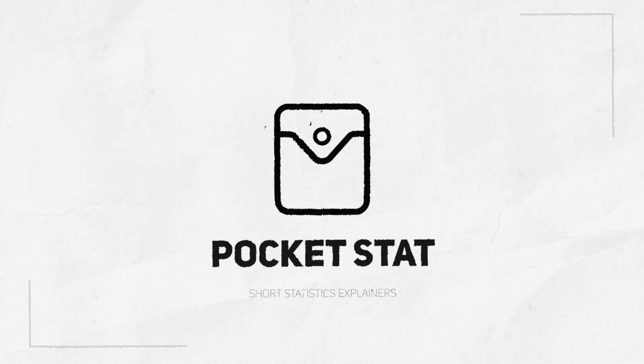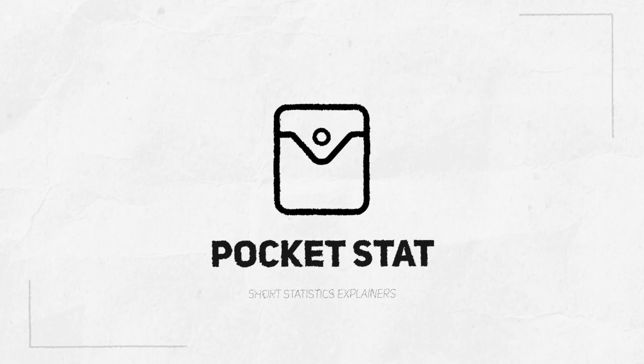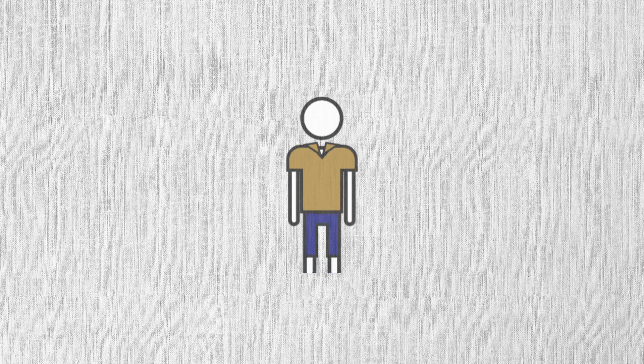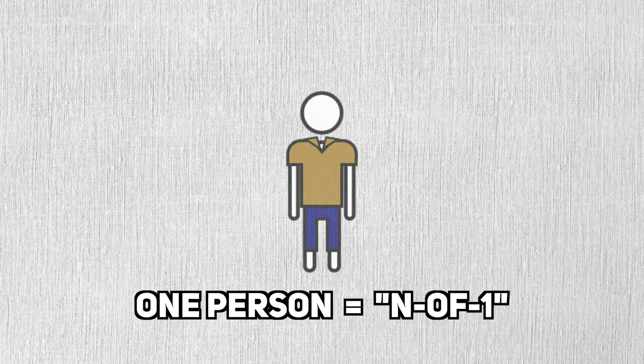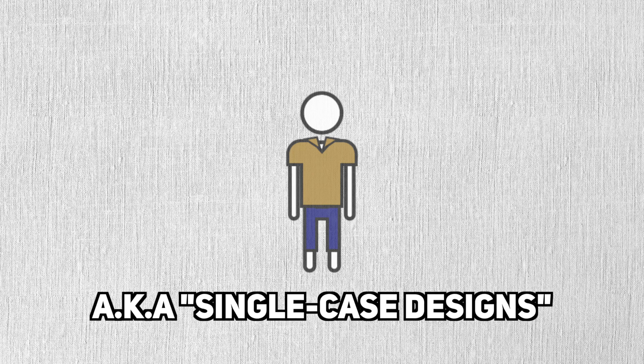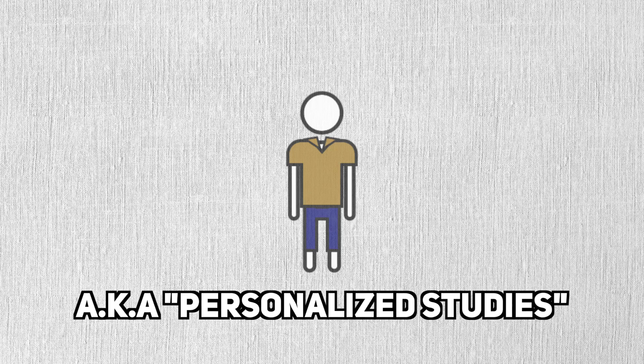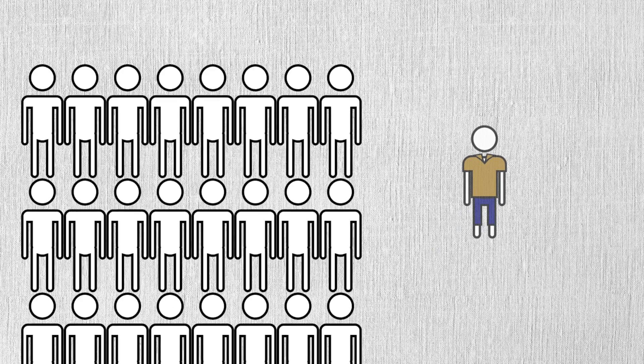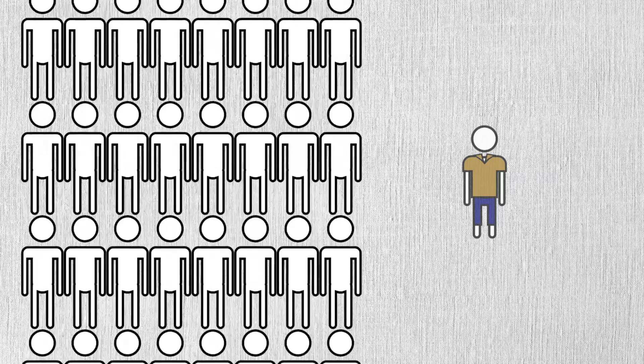This is Pocket Stat, a series of short explainer videos on useful and interesting concepts and statistics. In this video, we talk about the N of 1 trial. The N of 1 trial gets its name from the fact that only one person participates in the experiment. They're also known as single-case designs or personalized studies. That's a far cry from the hundreds or thousands of people that RCTs need, so how does that even work?